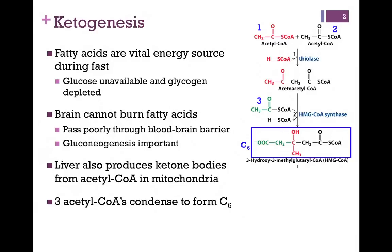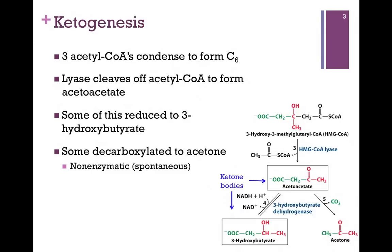So that's a six-carbon compound. Next, we have the enzyme lyase that's going to clip off that end acetyl-CoA group, and that will form acetoacetate, pictured here. This can then be reduced — the carbonyl carbon is reduced to a hydroxyl group — and that forms 3-hydroxybutyrate.